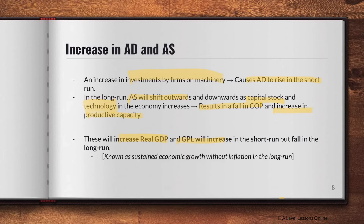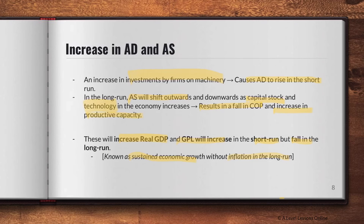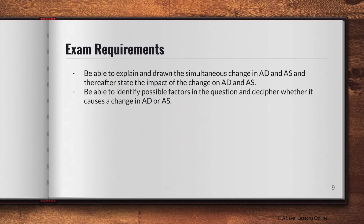In the short run, the increase in AD raises real GDP and GPL. But in the long run, the outward shift of long-run AS causes general price levels to fall marginally more than the short-run rise, so you can say GPL falls and real GDP increases in the long run. This is known as sustained economic growth without inflation. When there's an increase in GDP alongside a low and stable rate of inflation over time, your country is experiencing sustained economic growth, which is beneficial.